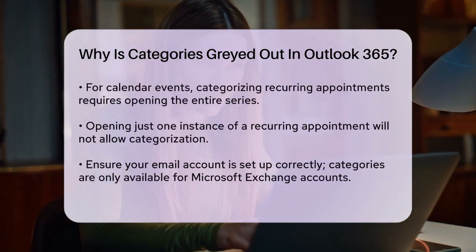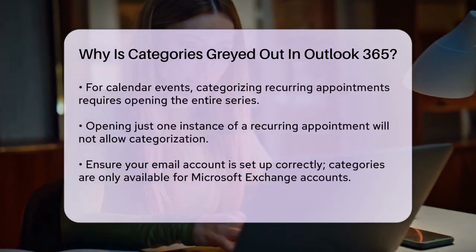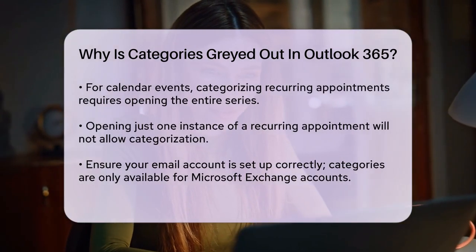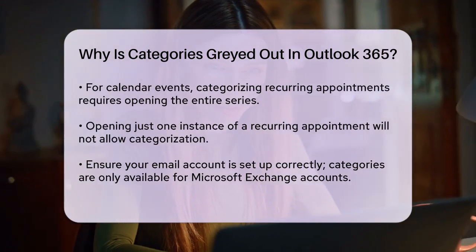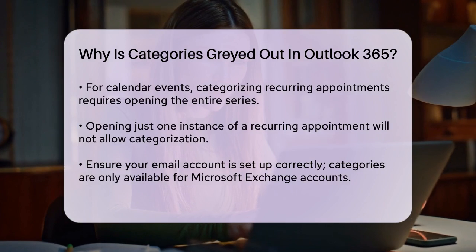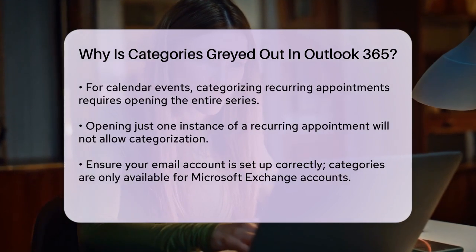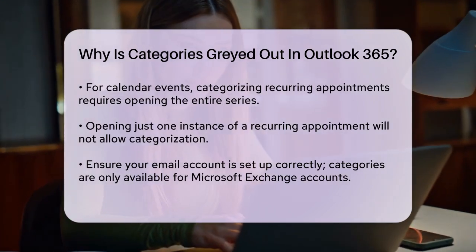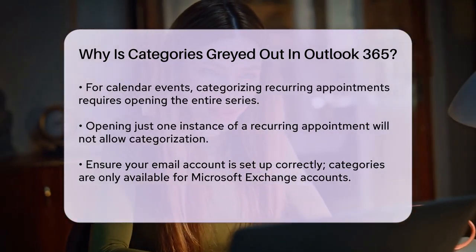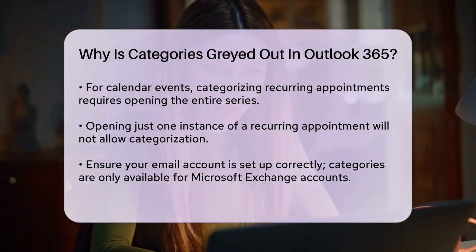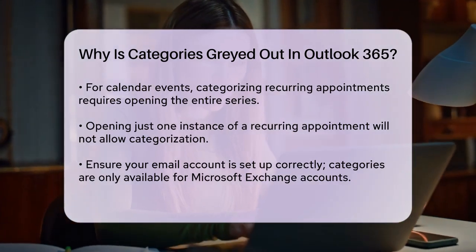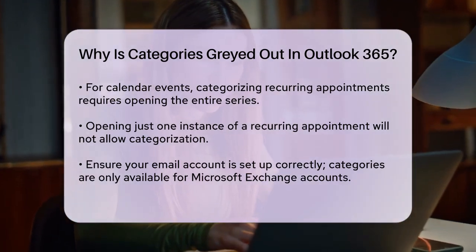When it comes to calendar events, the issue could be with recurring appointments. If you try to categorize a recurring appointment, the Categorize button might be grayed out. This happens because you need to open the entire series of the recurring appointment to apply categories. If you open just one instance of the recurring appointment, you won't be able to categorize it.